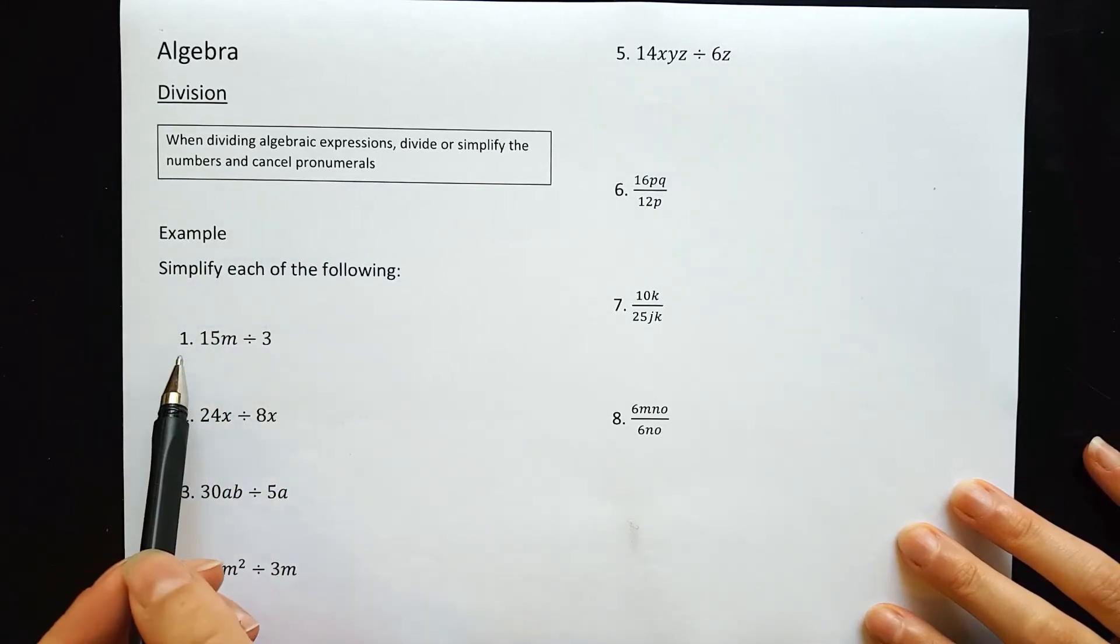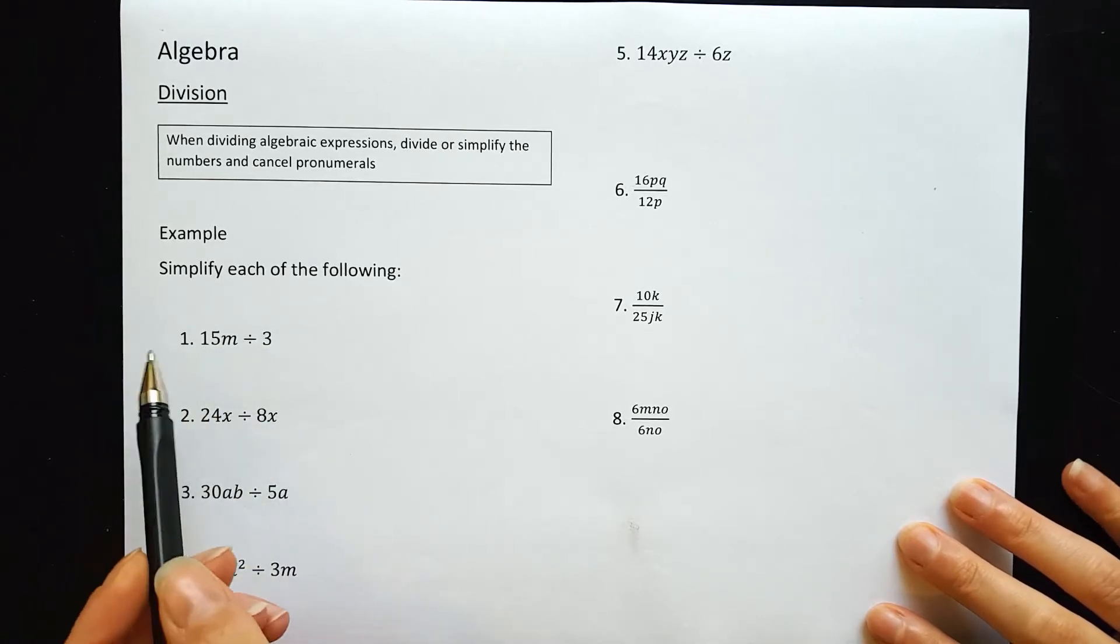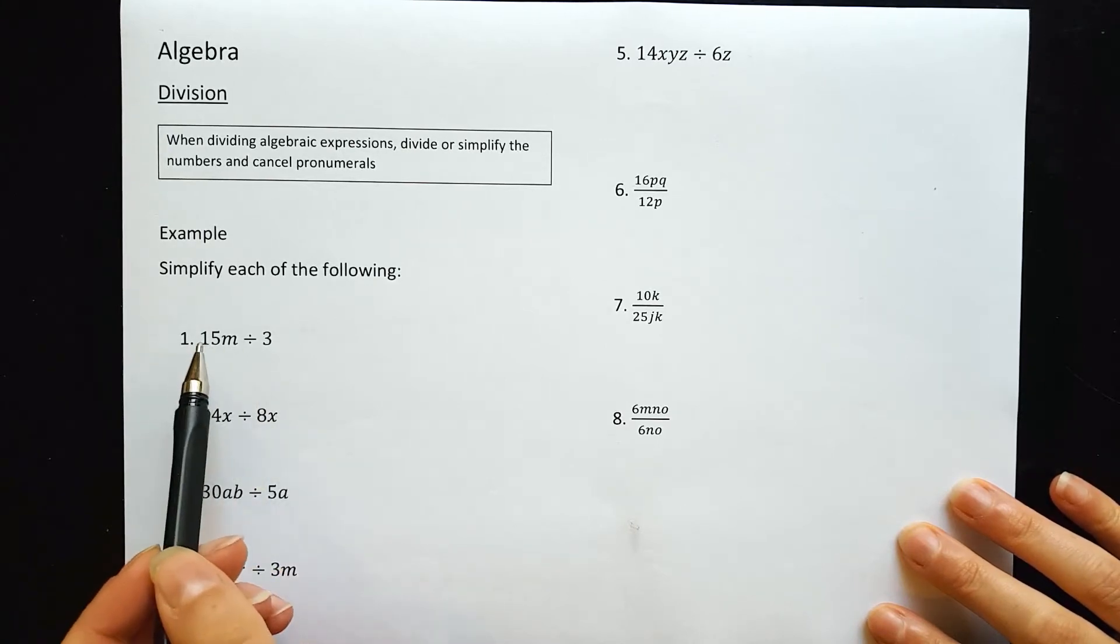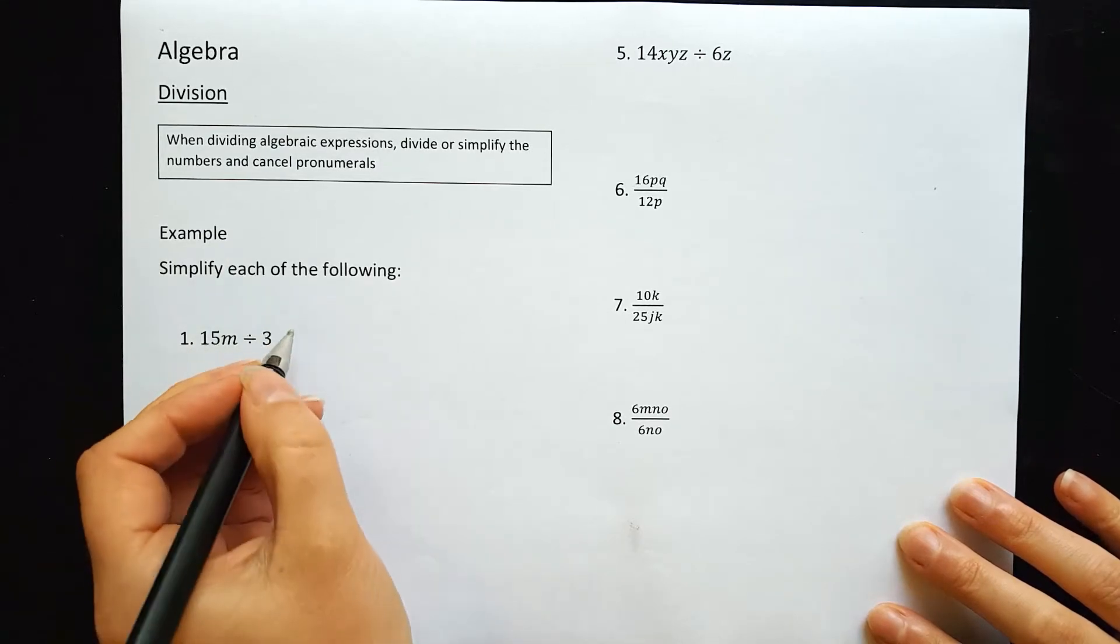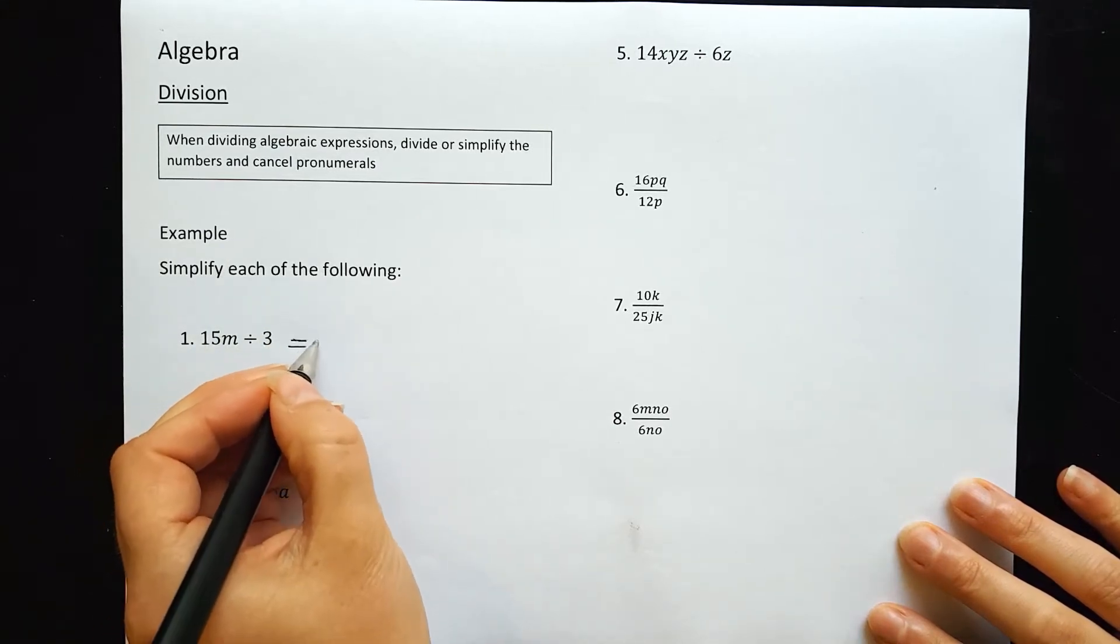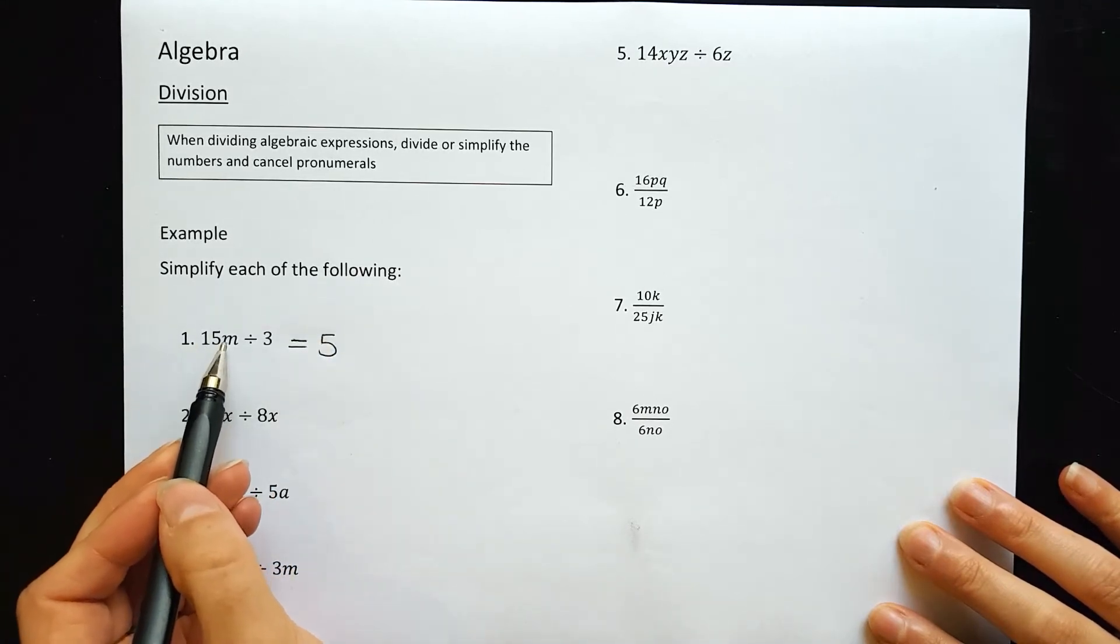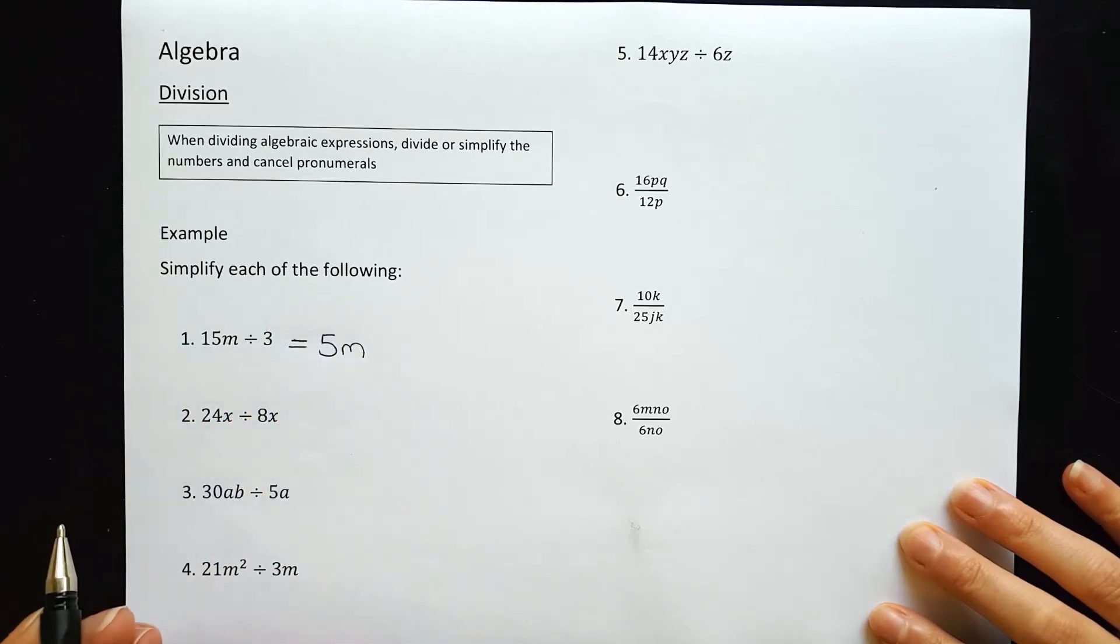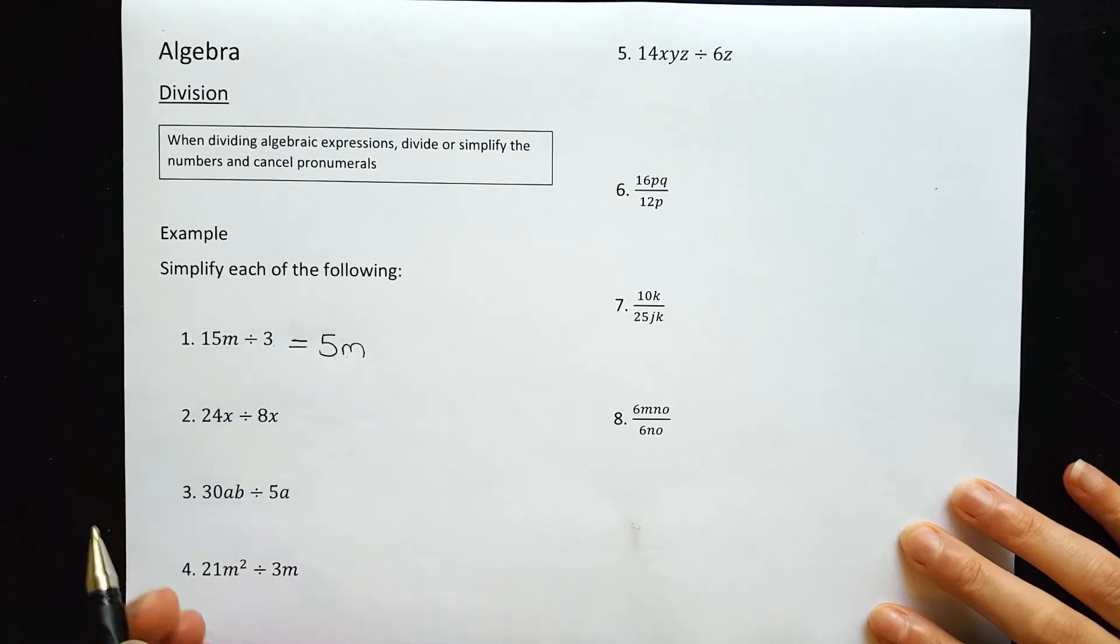Here's our first example. We want to simplify 15m divided by 3. First, we look at the numbers and work out whether we can divide them. 15 divided by 3 is 5, and the m sits after it. So 15m divided by 3 equals 5m.